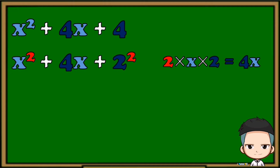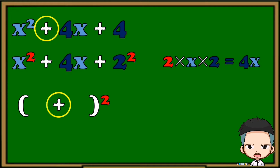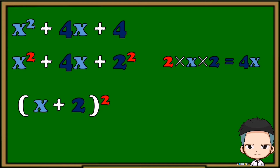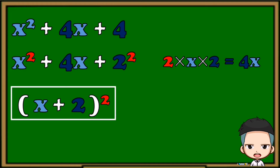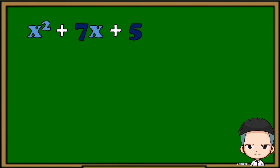To factor a perfect square trinomial, just follow these steps. First, prepare the parenthesis — we use the addition operation here because we're just copying the operation before the second term in our original given. Next, we're going to copy the base of the first term, then the base of the last term. Now we have our final answer: the factored form of x squared plus 4x plus 4 is the quantity of x plus 2, squared.